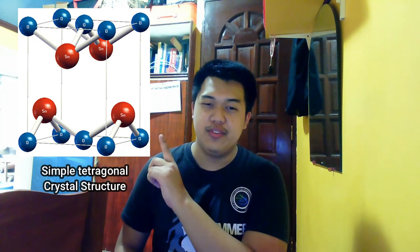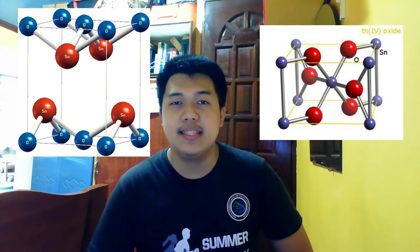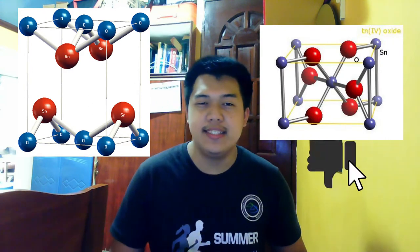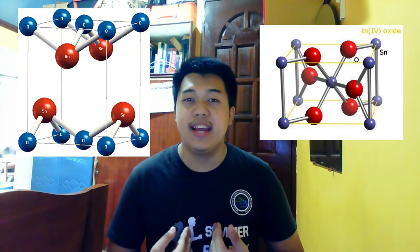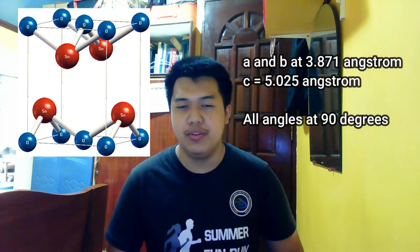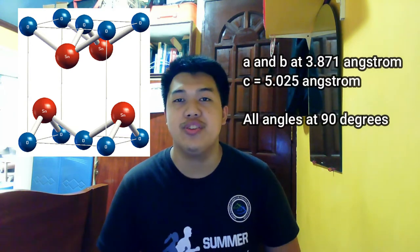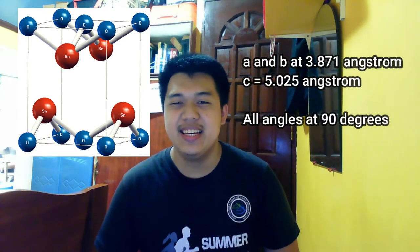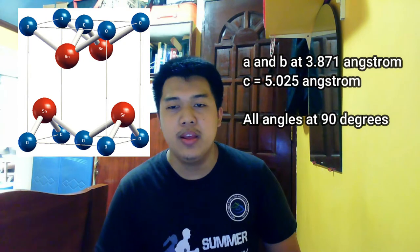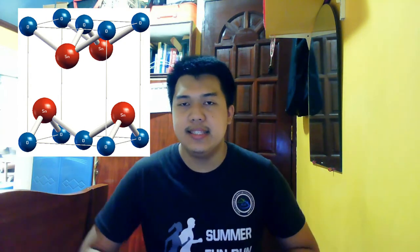Now let's proceed with the crystal structure. Tin 2 oxide has a tetragonal crystalline structure, which is common with other metal oxides. It is worth mentioning that it is slightly different from the body-centered tetragonal crystalline structure. We'll get to see the difference once the crystalline structure we made is finished. At its essential form, the lattice is measured at both A and B at 3.871 angstroms, and the other side C is at 5.025 angstroms, in which all angles are equal to 90 degrees — same as the usual characteristics of a simple tetragonal crystalline structure.